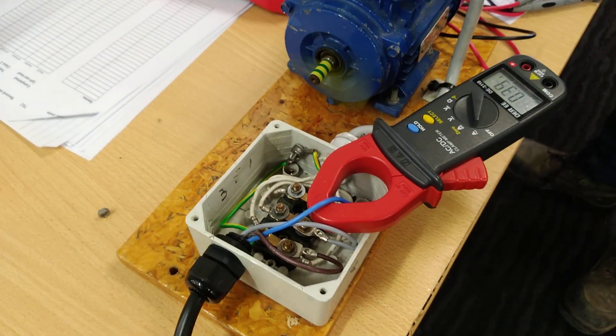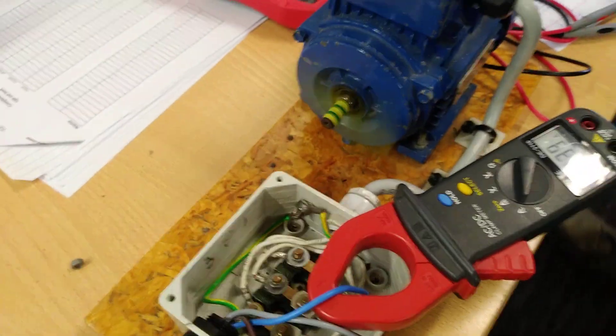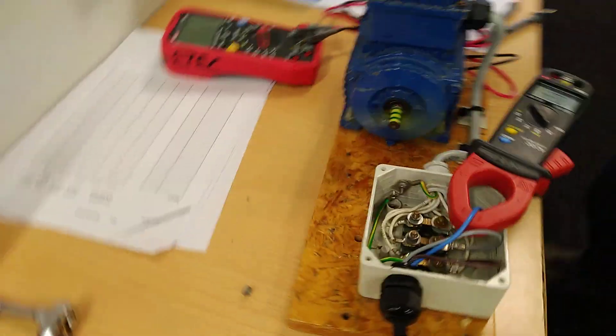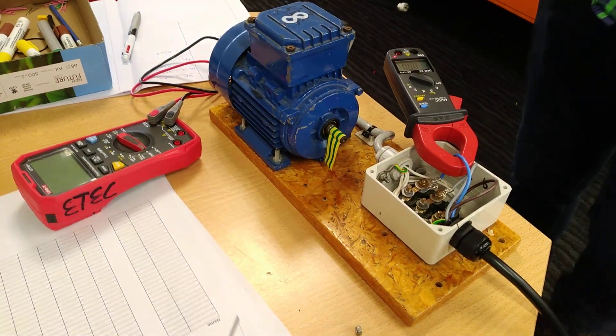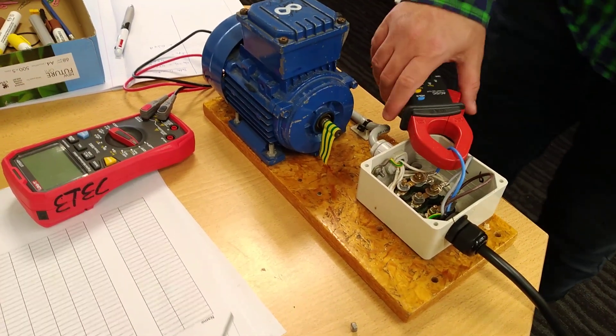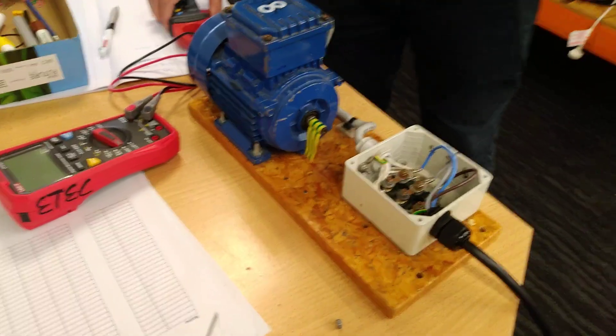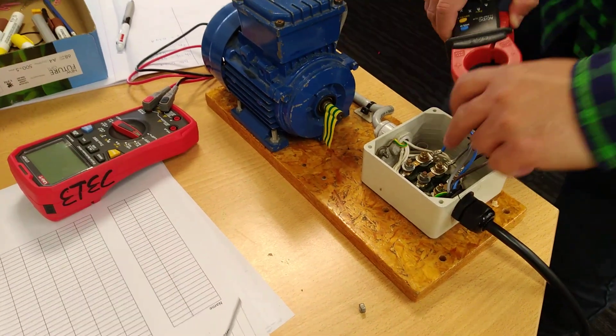Anyway let's do the rest. So turn it off and do your next measurement. Did you write that one down? Okay, let's do it on the next line. We'll change the direction afterwards. Okay switch it on again.